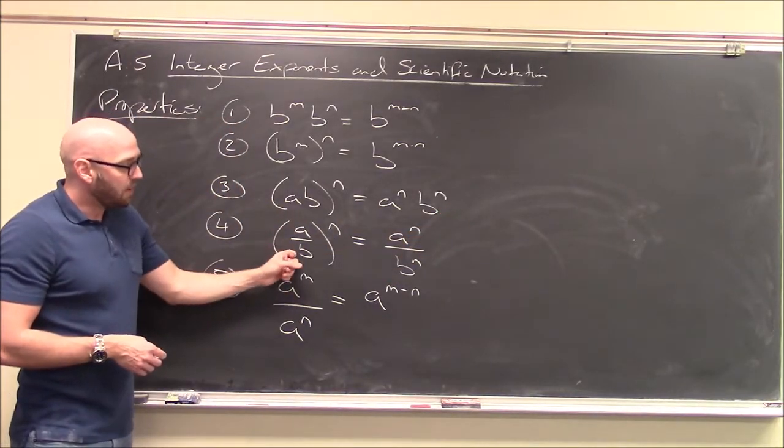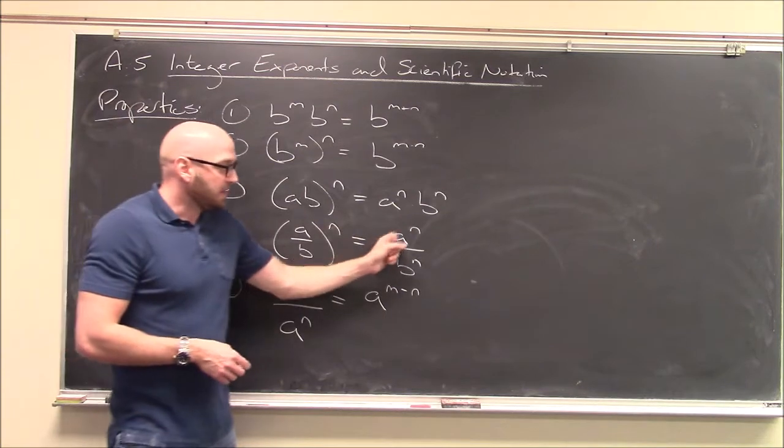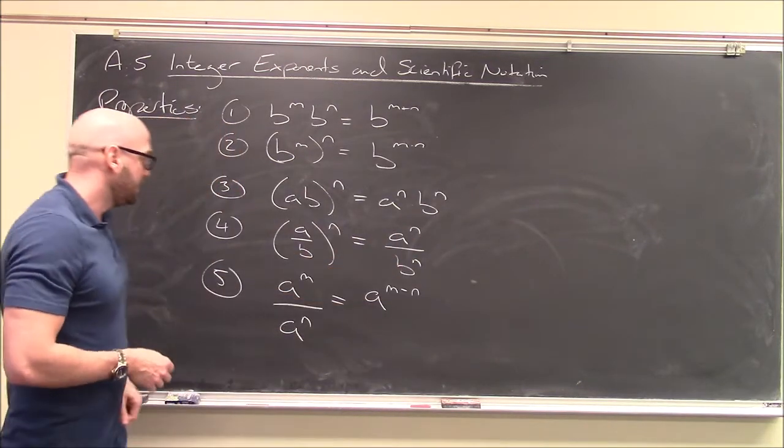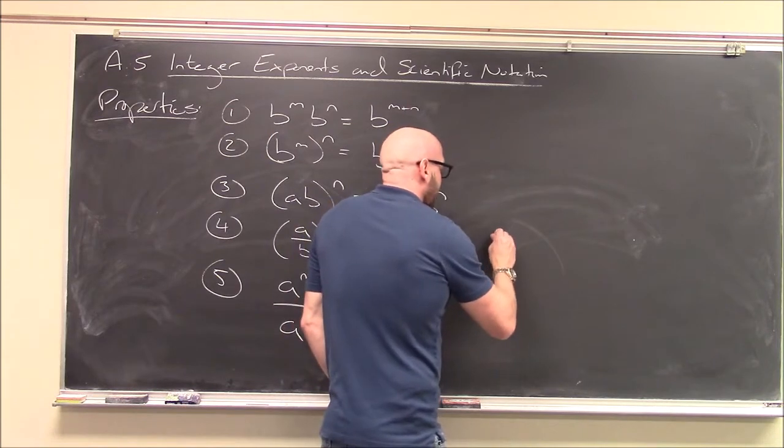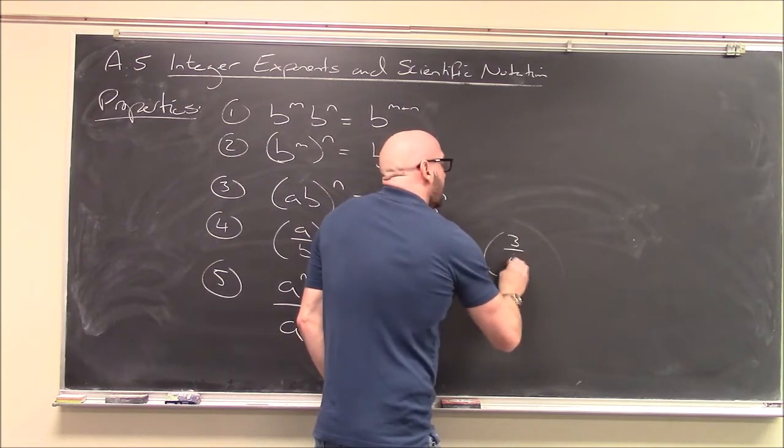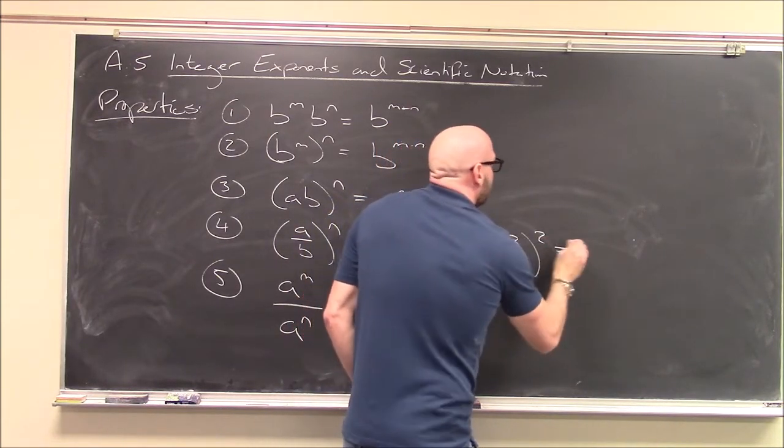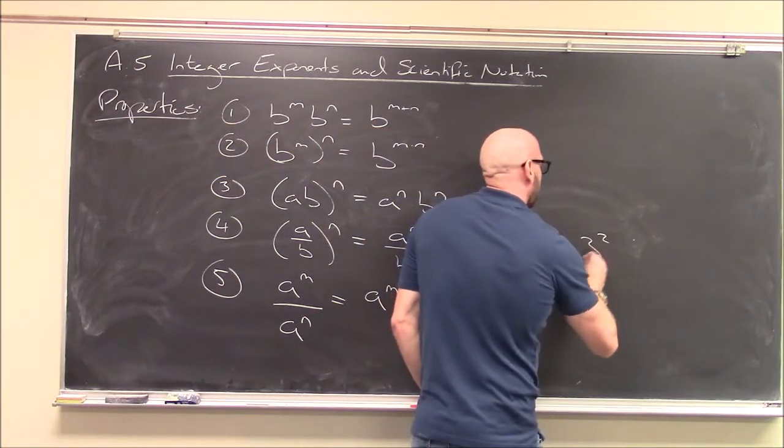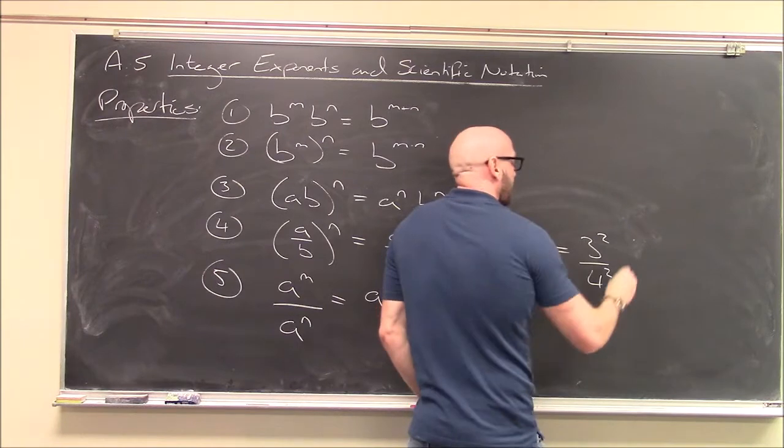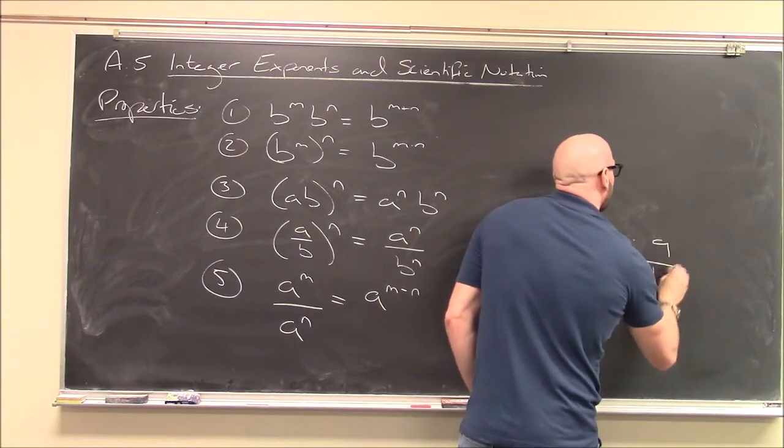Similarly, if I have a quotient, a over b to the n, I can take a to the n and divide it by b to the n. So something like 3 over 4 squared would just be 3 squared over 4 squared, which is of course 9 over 16.